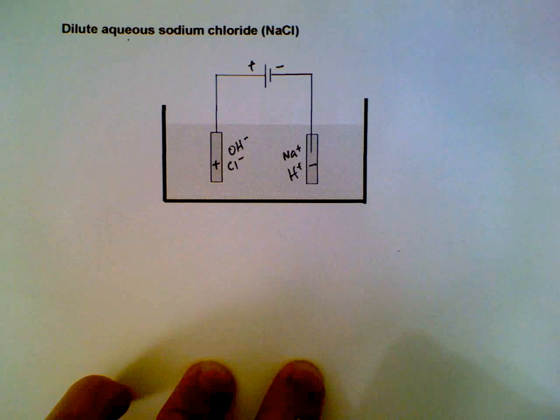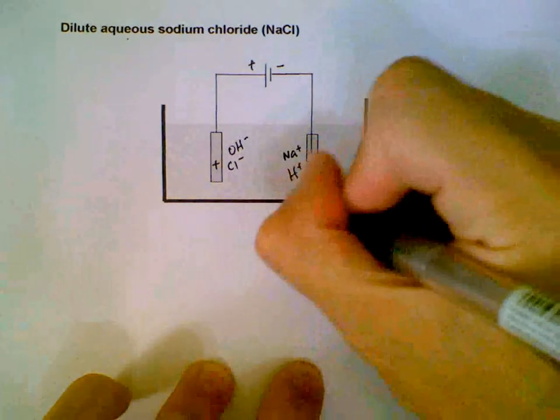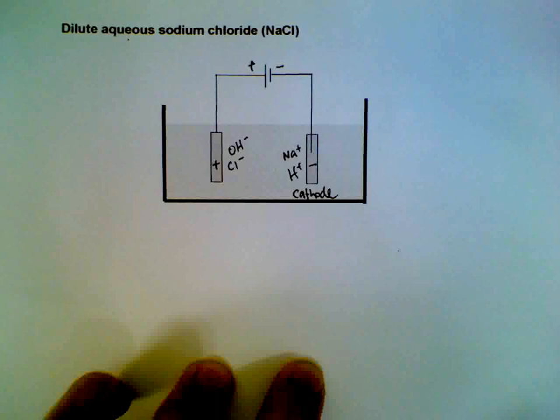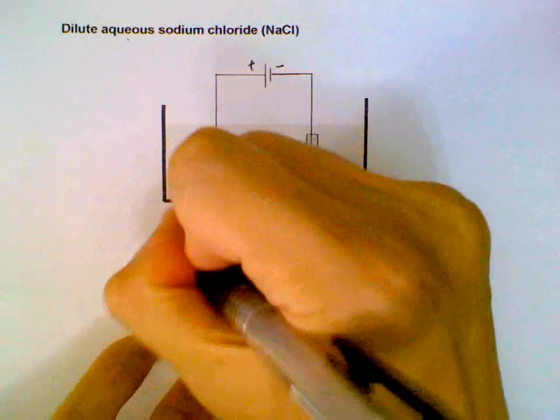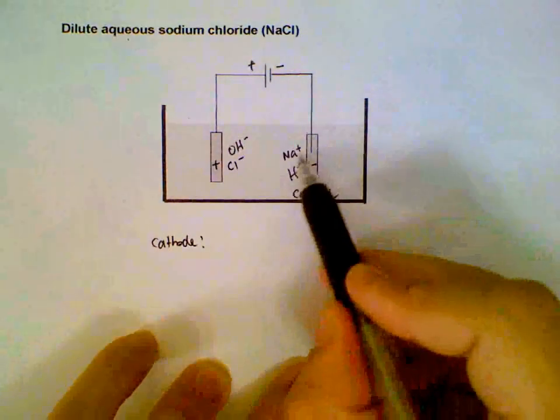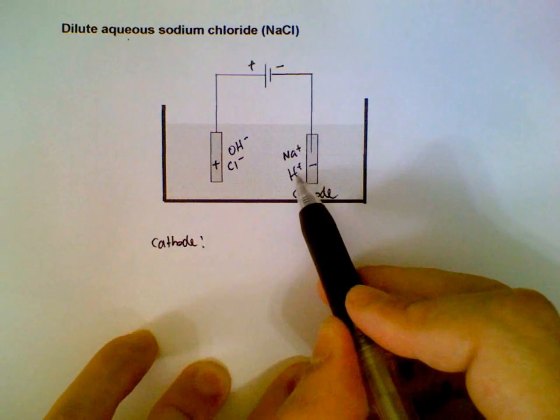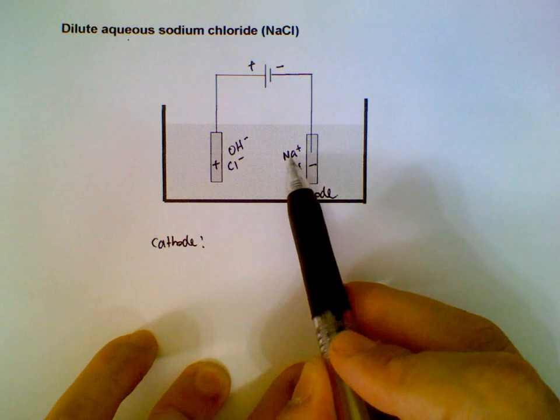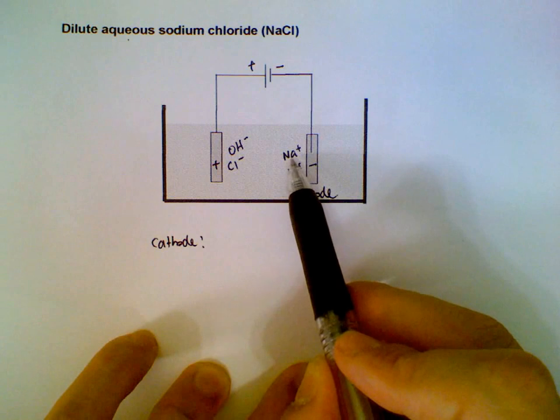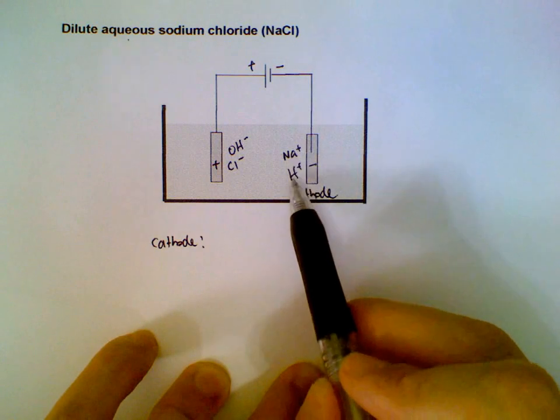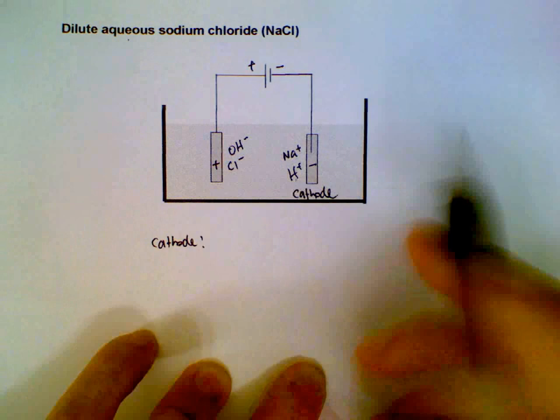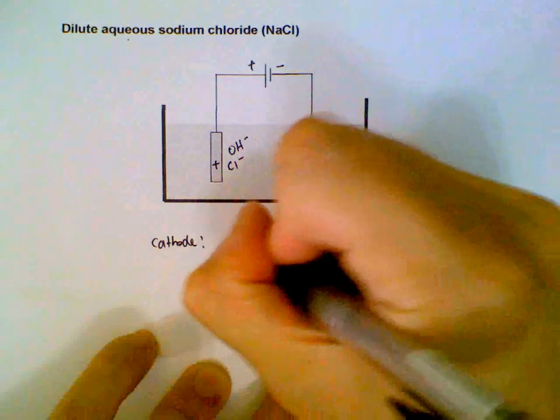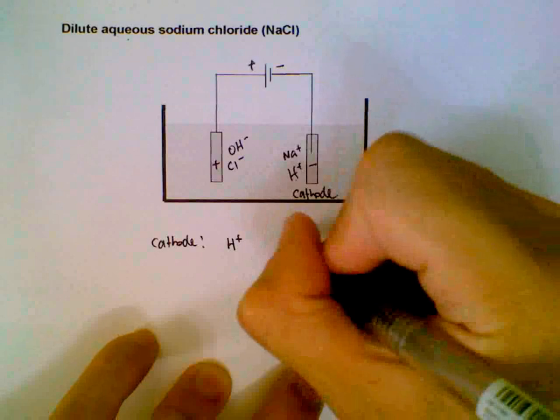Once we set this up, we decide which ions are discharged in preference. We deal with the cathode first. At the cathode we have sodium plus and hydrogen plus waiting to be discharged. Sodium comes from a very reactive metal, so the ion it forms is very stable. It's unlikely to accept electrons and go back to being sodium. In comparison, hydrogen ions will be accepting the electrons to form hydrogen gas.